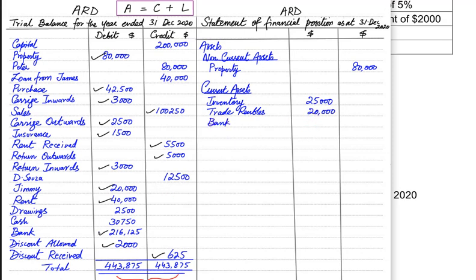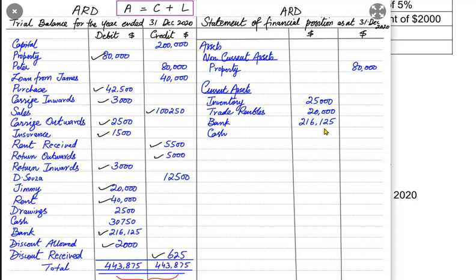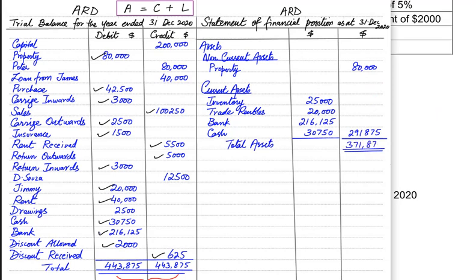Then we have bank and cash. If bank appears on the debit side of the trial balance, the business has a positive bank balance — in this question it is 216,125. If bank appeared on the credit side, it would be a bank overdraft. Since it is on the debit side here, we record this amount. Cash is also a current asset. Adding all current assets gives total current assets, and adding non-current and current assets gives total assets.